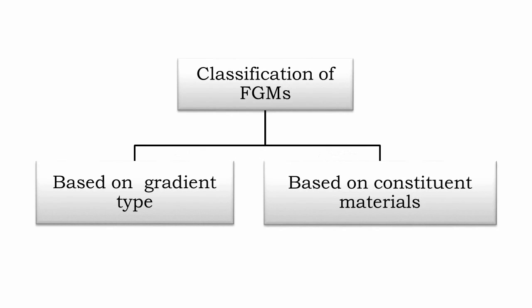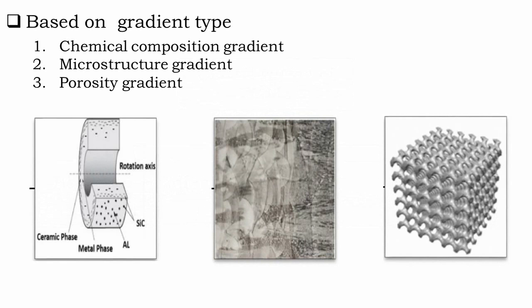Now let's talk about the classification of functionally graded material. Functionally graded material is classified based on two factors: first, based on gradient type, and second, based on constituent materials. Based on gradient type, there are primarily three types of FGM. The first one is chemical composition gradient, where the chemical composition is gradually varied according to the spatial position of the material. This could be in the form of a single phase or a multiphase material.